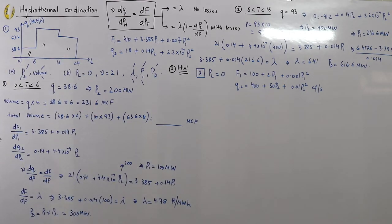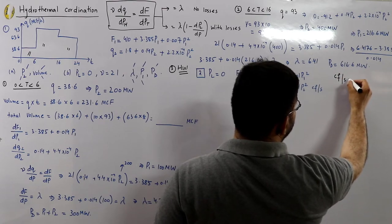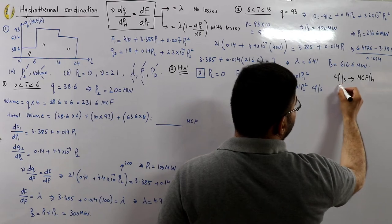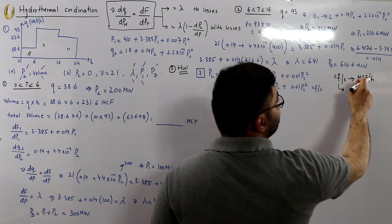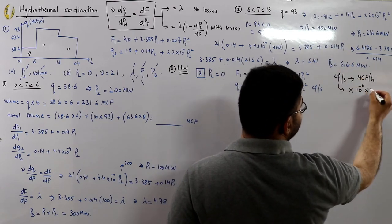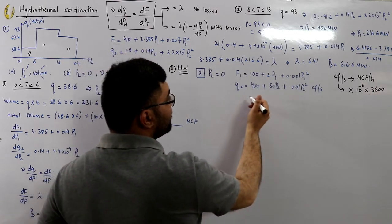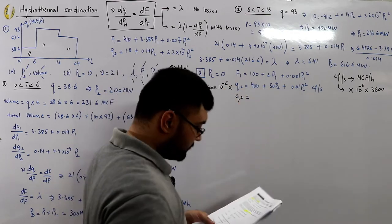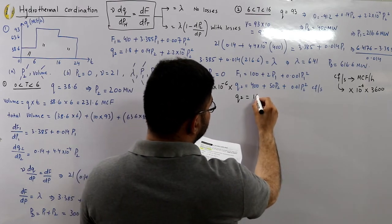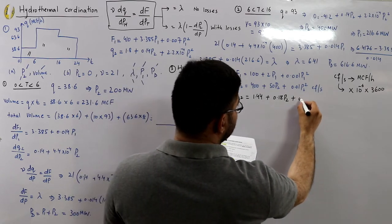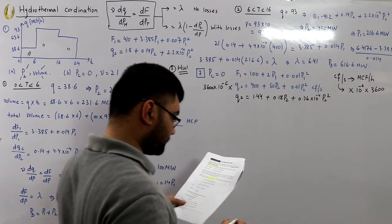Since q2 is given in cubic feet per second, it must be converted to million cubic feet per hour. Multiply by 3600 (seconds per hour) and by 10⁻⁶ (to get millions), giving a factor of 3600 × 10⁻⁶. After conversion: q2 = 1.44 + 0.18·P2 + 0.36×10⁻⁴·P2² (in million cubic feet per hour).